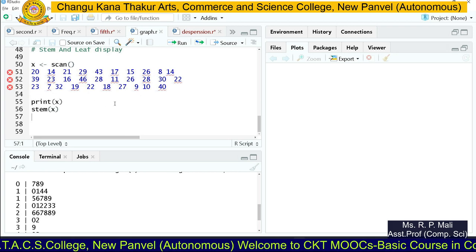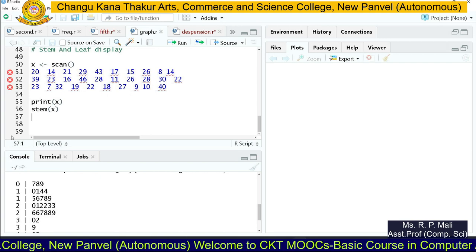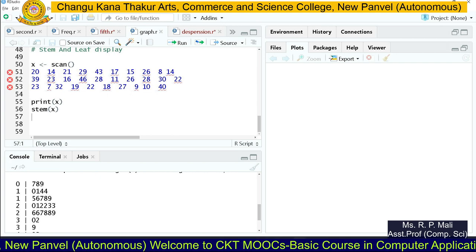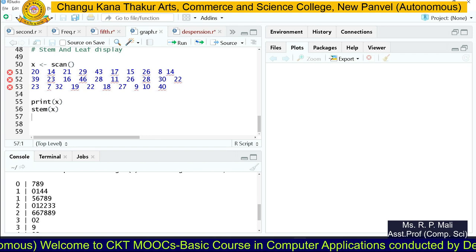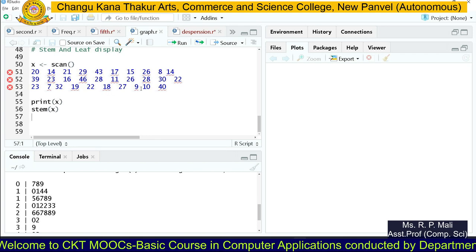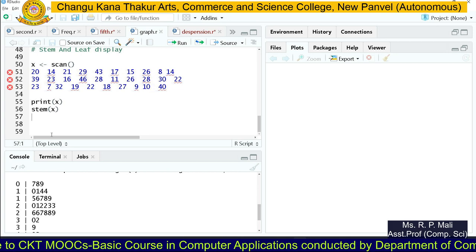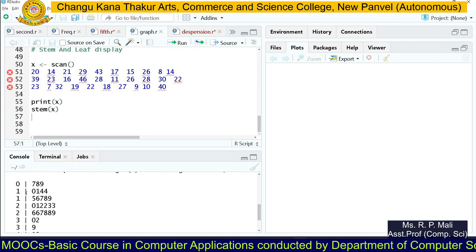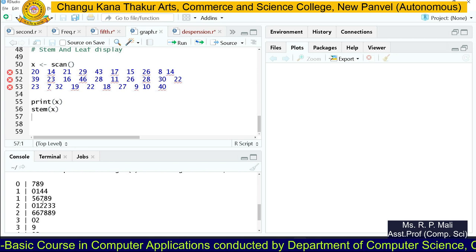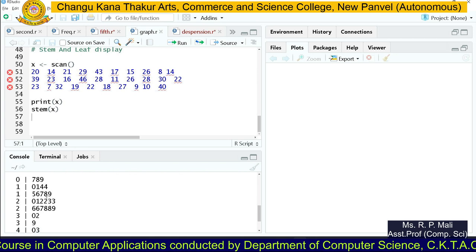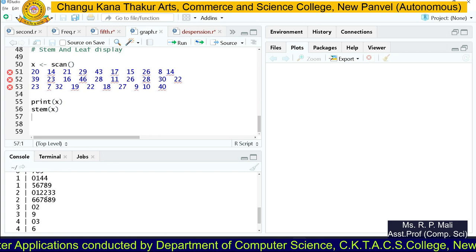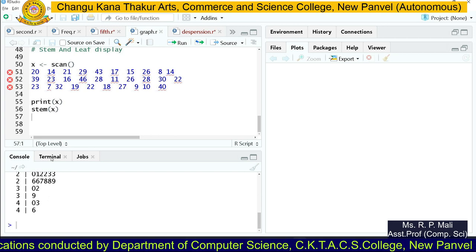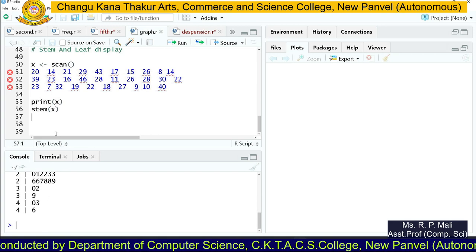After that you have numbers starting with 1, so 10, 11, 14, 14, 15 are the values presented. Then values starting with 2 are there, then 3, 4, and likewise we have the data. Thank you.